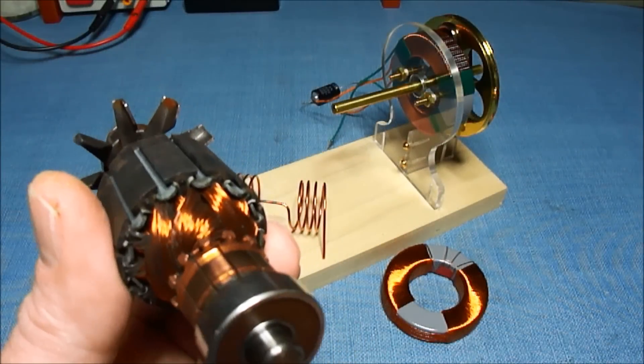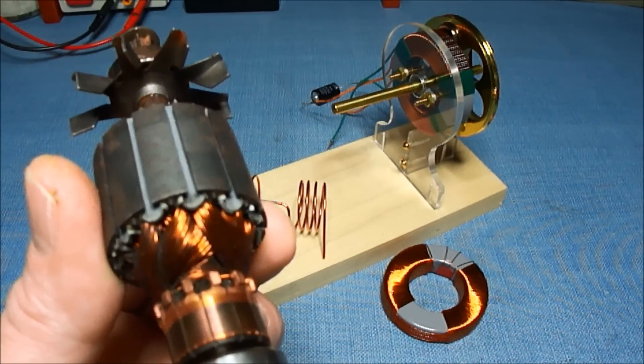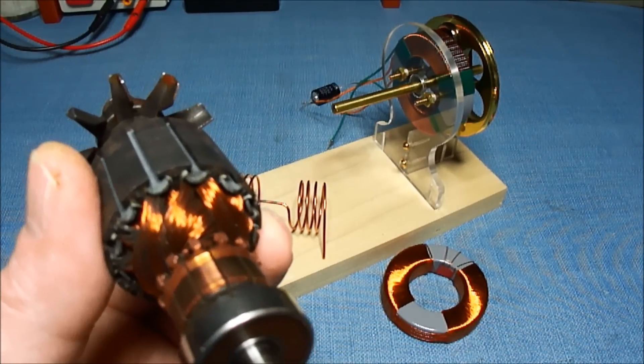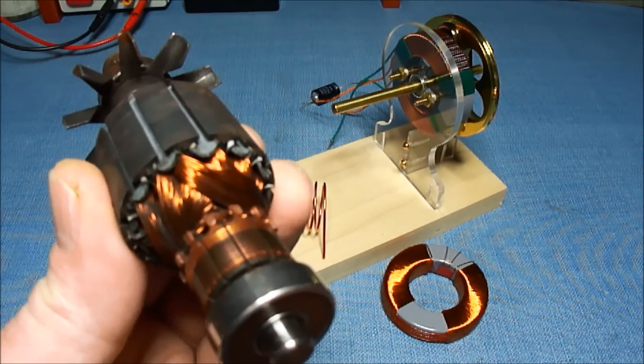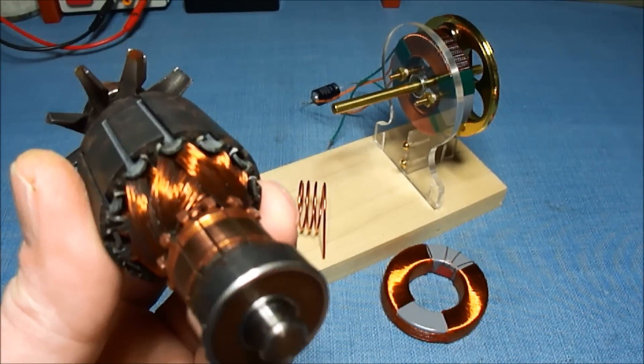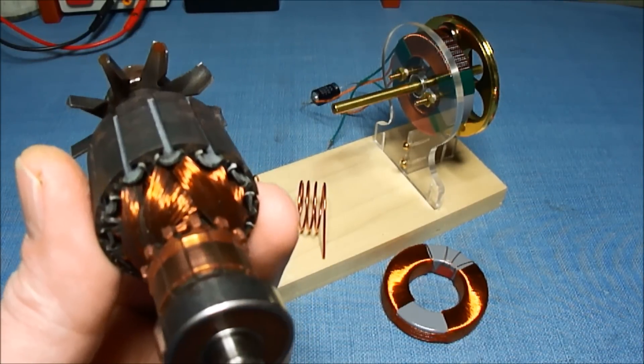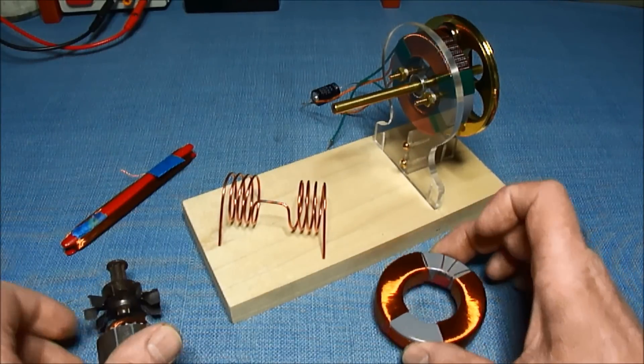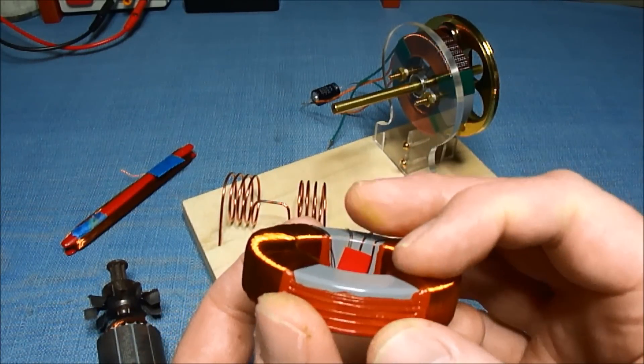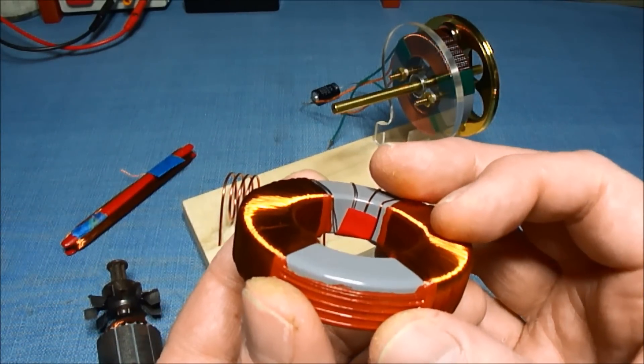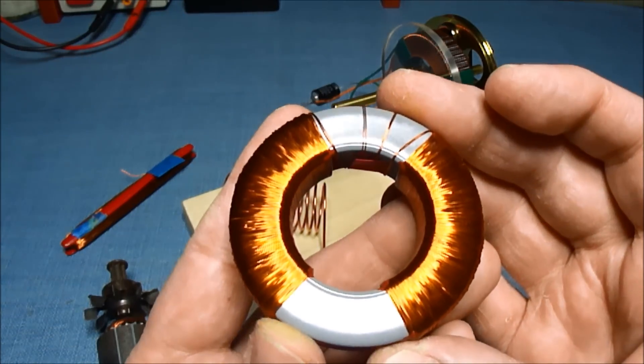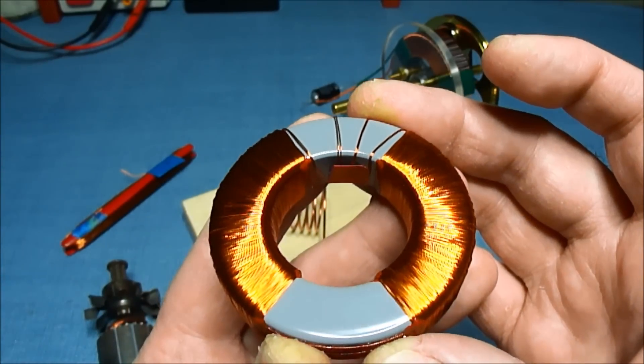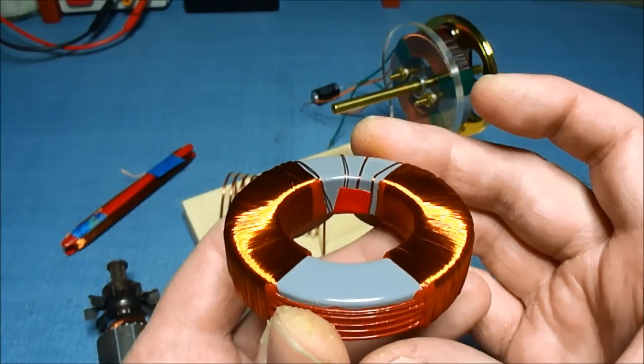Having projecting pole pieces on a generator can cause sticky points or an increased need of torque in a generator. Depending on the design, sometimes you can't get away from those because you need to get the magnets so close to the core. I didn't want to add any projecting pole pieces on this toroid. The only possible drag that could be put on this generator is from the coils themselves.